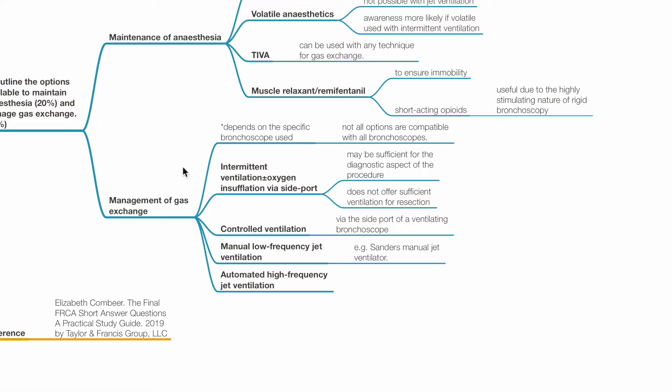Controlled ventilation via the side port of a ventilating bronchoscope is another option. Other options include manual low-frequency jet ventilation and automated high-frequency jet ventilation.